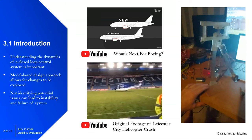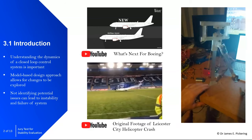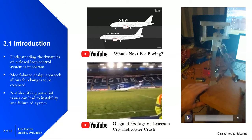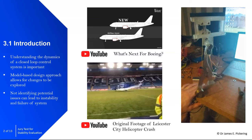It's very important to understand the dynamics of a closed loop control system, or even an open loop system and then control on top of that. I've got a couple of videos for you to watch in your own time. On YouTube, if you type in 'What's next for Boeing', watch that video. It's very interesting — Boeing redesigned their aircraft and sadly the redesign ended up with the Boeing plane becoming unstable and unfortunately caused large fatalities. Also the Leicester helicopter crash video is interesting, where there were issues with sensors and as a result the system became unstable. There's also a pendulum attempting angle control that's potentially going unstable.